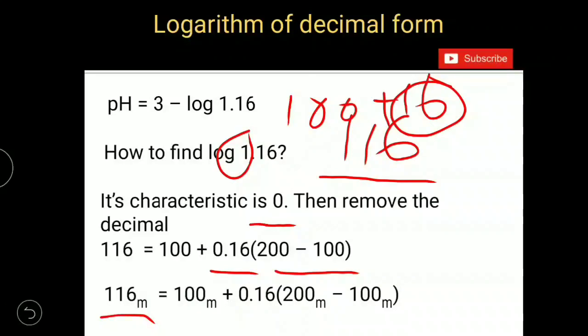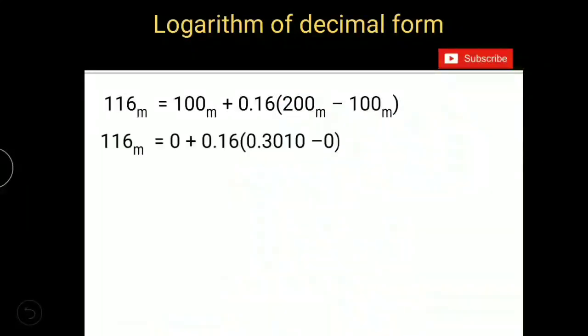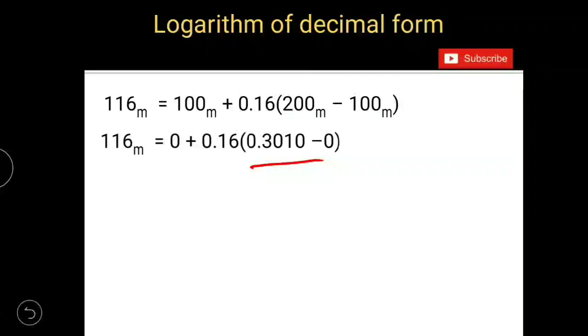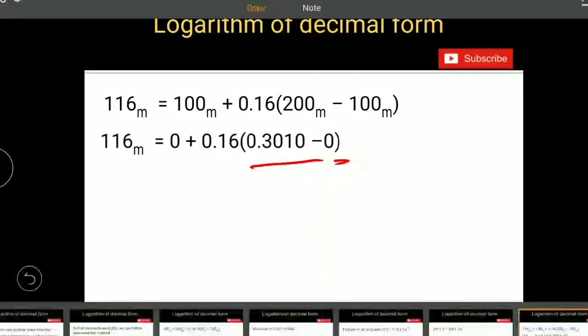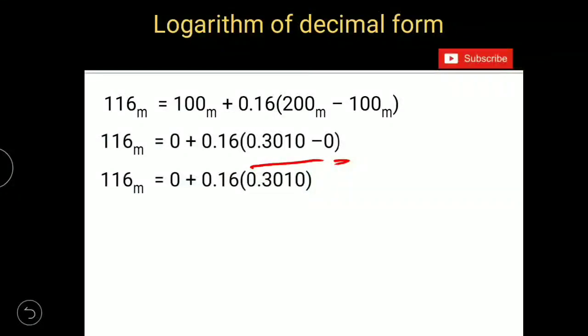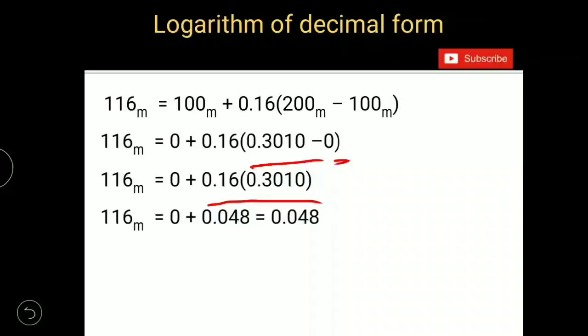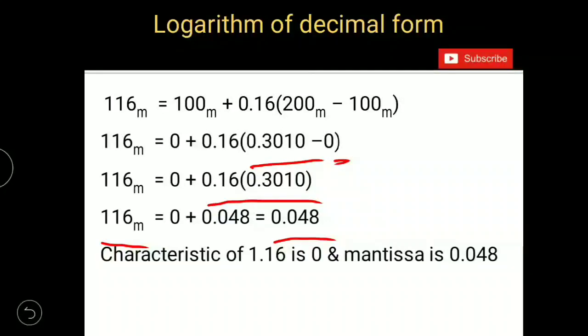Mantissa of 116 is equal to mantissa of 100 plus 0.16 into mantissa of 200 minus mantissa of 100. 200 mantissa is 0.3010. 100 mantissa is 0. So you will get mantissa of 116 as 0.16 into 0.3010, which is approximately equal to 0.048. It is equal to mantissa of 116. But we need log value of 1.16. So what is the characteristic of 1.16? 0. Mantissa? 0.048. So log 1.16 is 0.048.